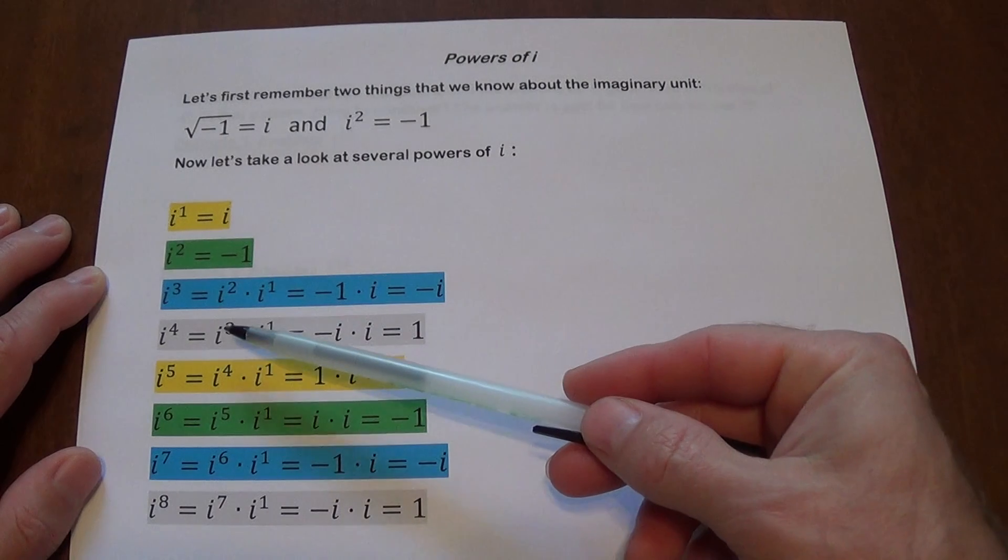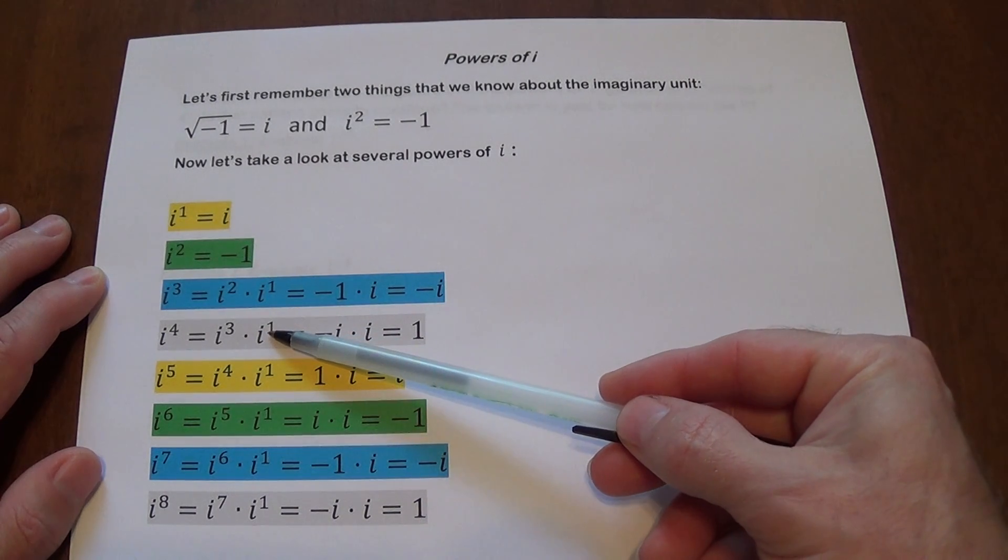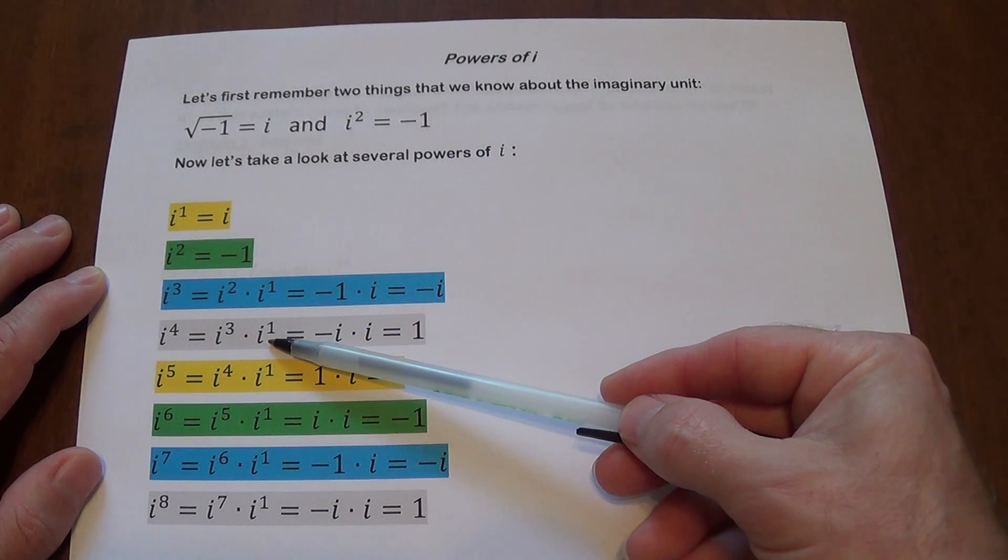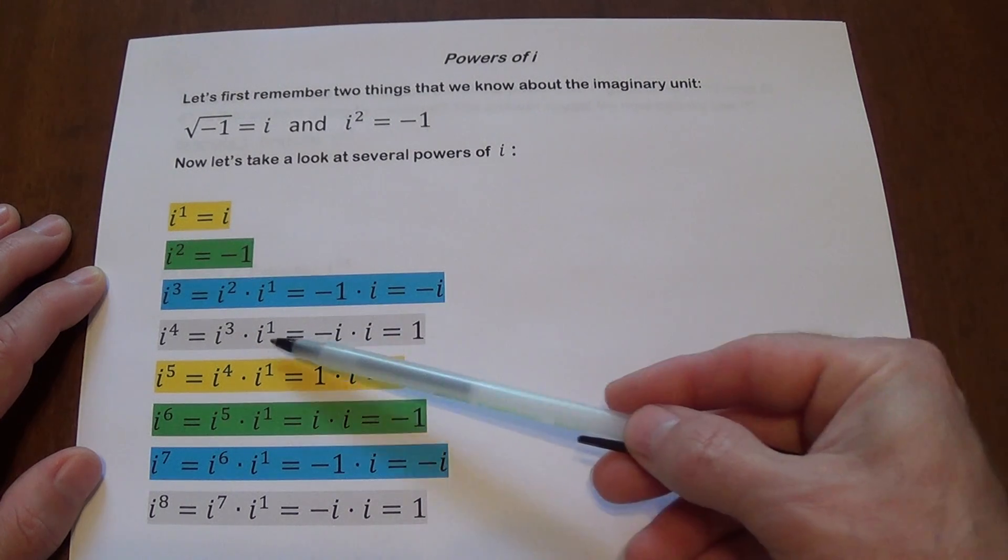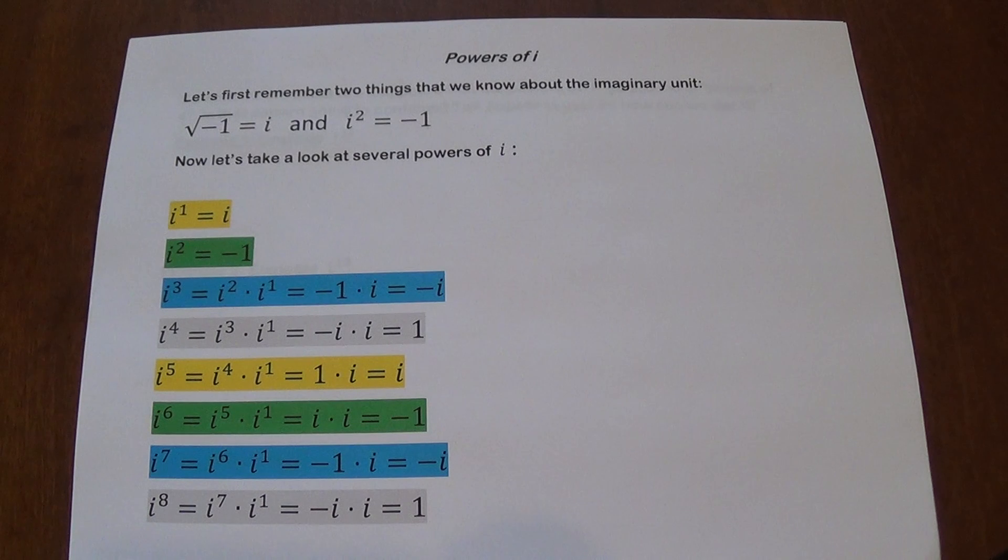i to the fourth can be broken down as i to the third times i to the first. This is, by the way, not the only way to break it down. There are other ways to do that, but there's just one possibility. i cubed, as we already know from earlier, is negative i. i to the first is i. You multiply negative i by positive i, you're going to get one.